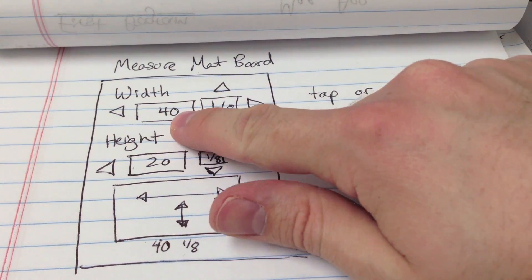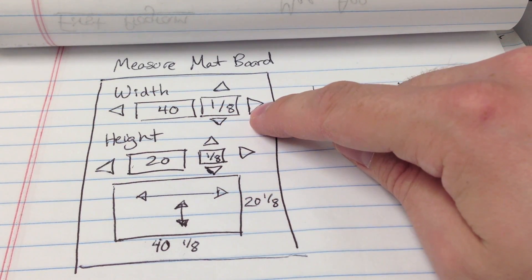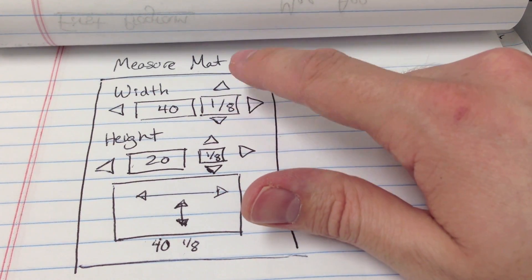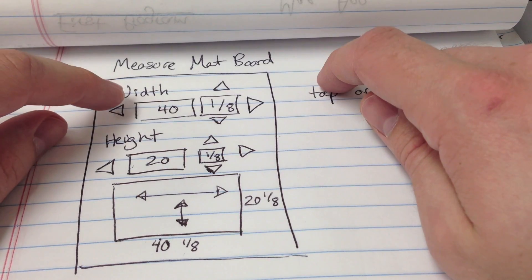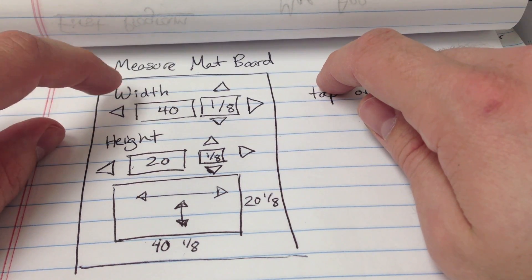Right now it says 40 inches, and I want to increase it to 41, 42, 43, or back down to 42, 41, 40.